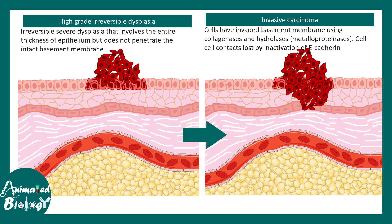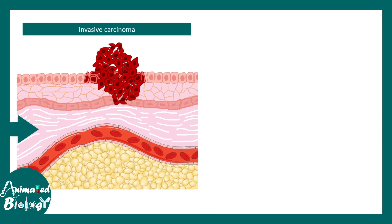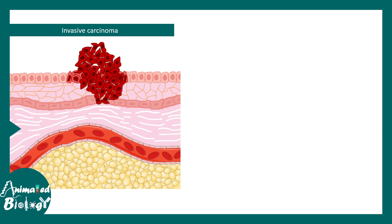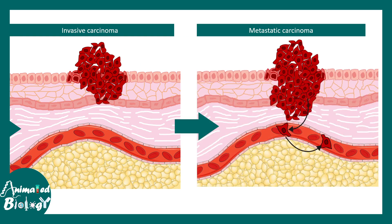The cells penetrate the basement membrane with the help of collagenase, hydrolase, and similar enzymes. The adhesion properties between cells also change, due to the loss of E-cadherin. Invasive carcinoma can then turn into metastatic carcinoma based on different gene expression alterations and changes in the microenvironment.